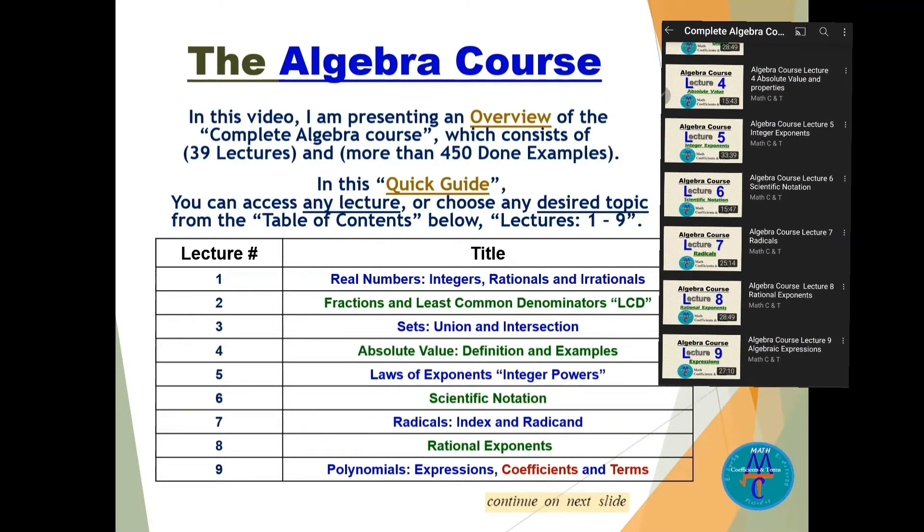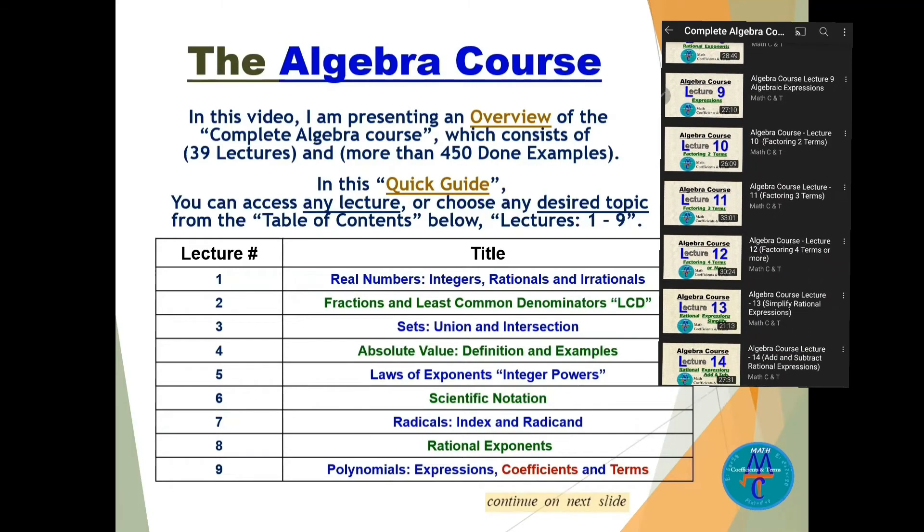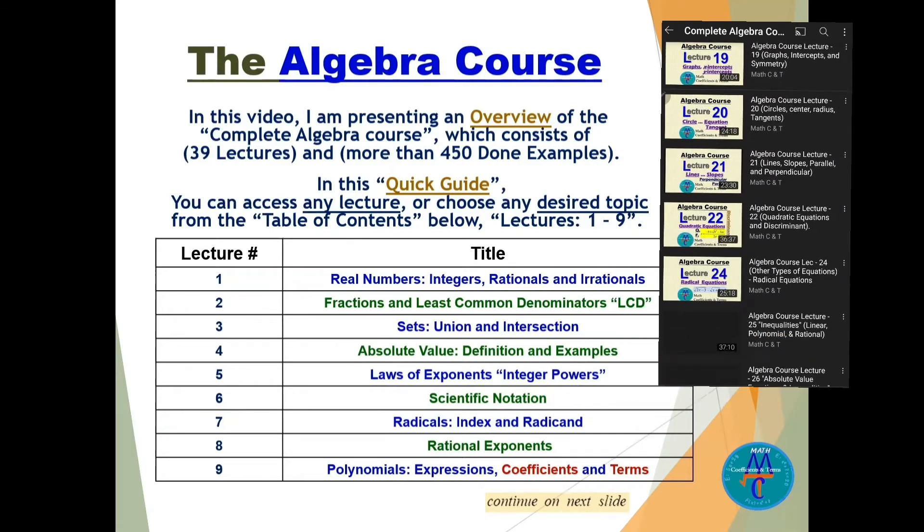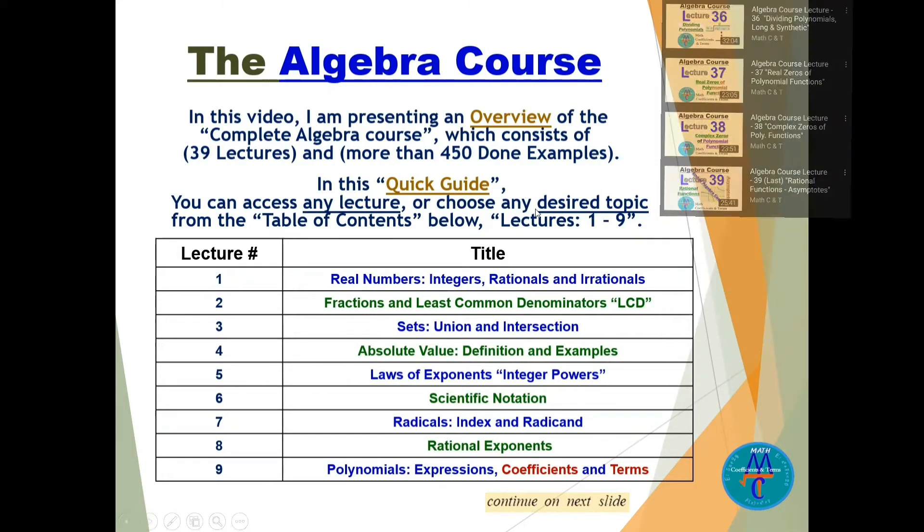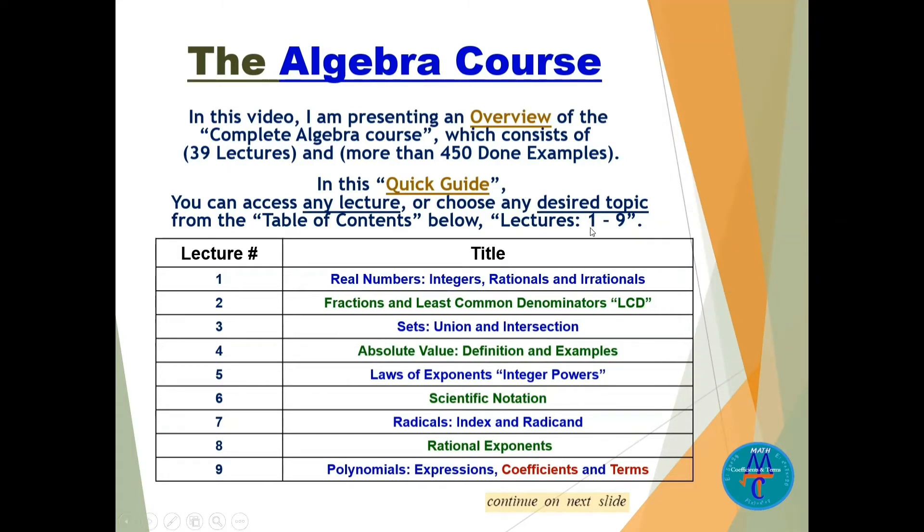In this quick guide, you can access any lecture or choose any desired topic from the table of contents. Here I start with lectures one to nine. If you need anything about real numbers, integers, rationals and irrationals, just go to lecture number one.